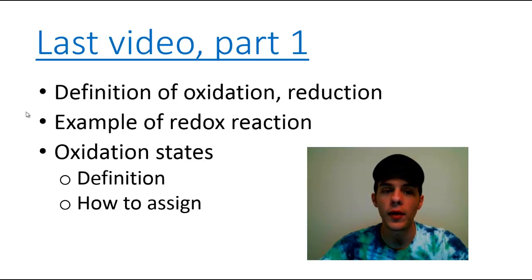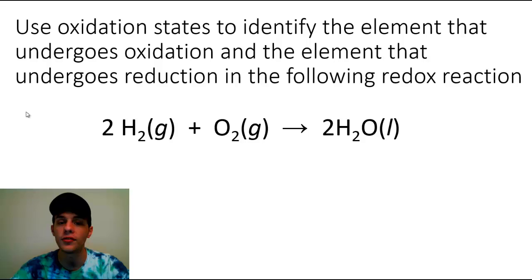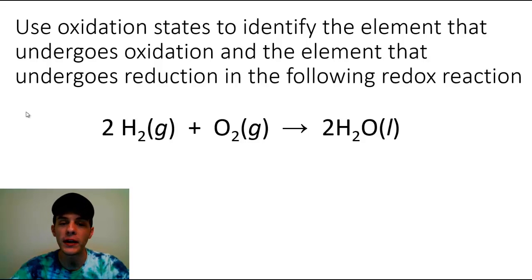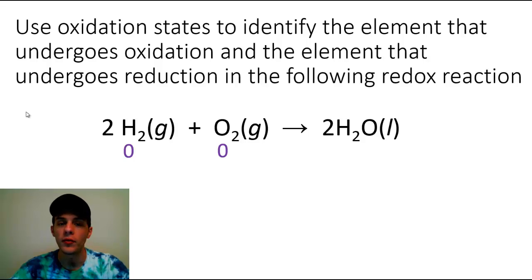Without further ado, let's get into an example. This example tells us to use oxidation states to identify the element that undergoes oxidation and the element that undergoes reduction in the following redox reaction. We have hydrogen and oxygen coming together to form water. Starting with the reactants, recall that any free element is always going to have an oxidation state of zero. So for both pure hydrogen and pure oxygen, both are going to have oxidation states of zero.